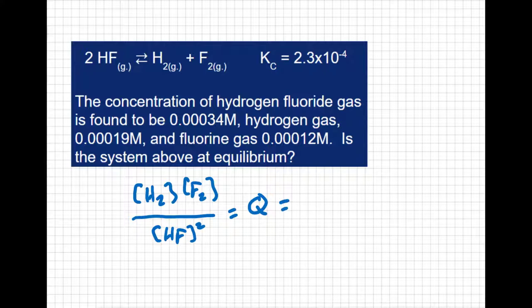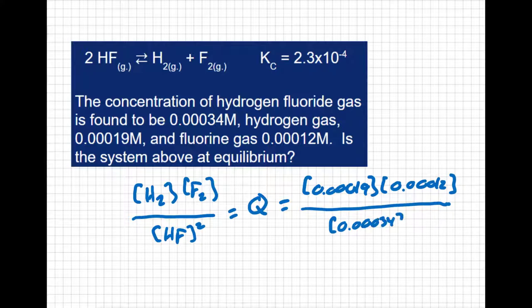So I'm going to plug in the values that I'm given. My concentration of hydrogen is 0.00019 molar, my concentration of fluorine is 0.00012 molar, and I'm going to divide by my concentration of hydrogen fluoride, which is 0.00034 molar squared. And when I solve for that, I get a Q value equal to 0.197. Now we've been given a K for this. We know that K should be 2.3 times 10 to the negative 4.